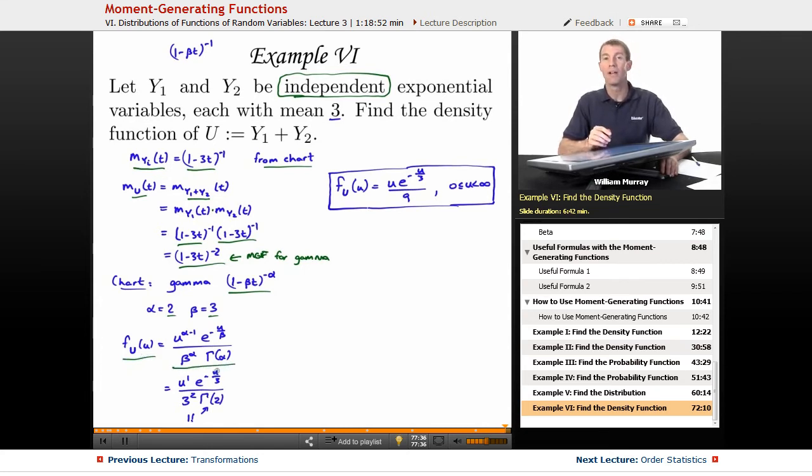This comes from our earlier lecture on the gamma distribution. So you can go back and look that up if this formula seemed to come out of left field. And then I plugged in my alphas and my betas. Gamma function. Remember that gamma of n is just n minus 1 factorial, if n is a whole number. So gamma of 2 is just 1 factorial, which is just 1. And so I just simplified everything here, and I got down to ue to the minus u over 3, all divided by 9. And that's my range for the gamma distribution is going from 0 to infinity.